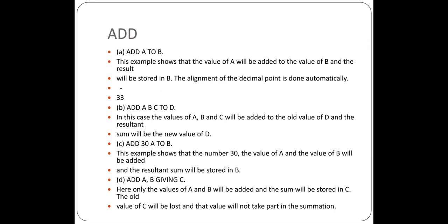Examples of the ADD verb: First, ADD A TO B — we add the value of A to the value of B and store the result in B. If A is 2 and B is 3, the resultant value 5 is stored in B. Second, ADD A, B, C TO D — we add the values of A, B, C, and D and store the result in D. Third, ADD 30, A TO B — we add 30, A, and B and store the result in B. Fourth, using GIVING: ADD A, B GIVING C — we add A and B and store the result in C.